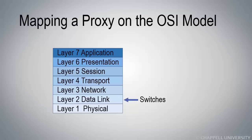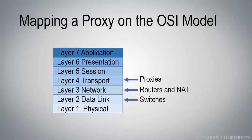Routers and network address translation devices are layer three devices — they are network layer devices. Proxies are considered layer four devices. They begin at the transport layer and go above that, because when you are completely setting up a brand new TCP connection on behalf of a client, you're working with layer four and above.